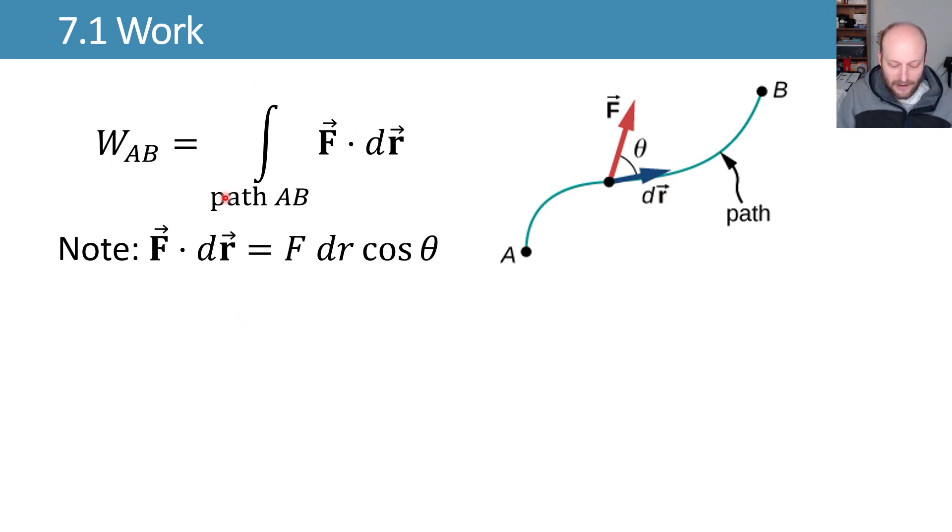So our work from A to B is you add up all the little bits of force that are acting in the direction of motion as we travel from some initial position to some final position. This will have units then of force times a distance, or newtons times meters, which we call joules after the scientist, where one joule is one newton meter.